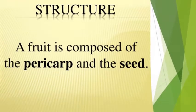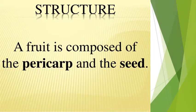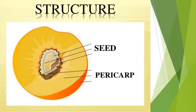We will now study the structure of the fruit. A fruit is composed of two major parts: the pericarp and the seed. The pericarp is also called the fruit wall — the ovary wall changes into the fruit wall, which is termed the pericarp. So pericarp is the fruit wall, and the seed is enclosed within it. See this diagram — it is a very self-explanatory diagram of a fruit.